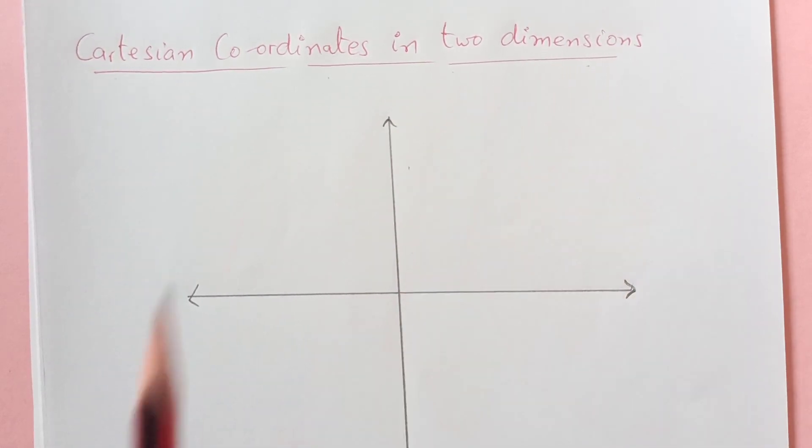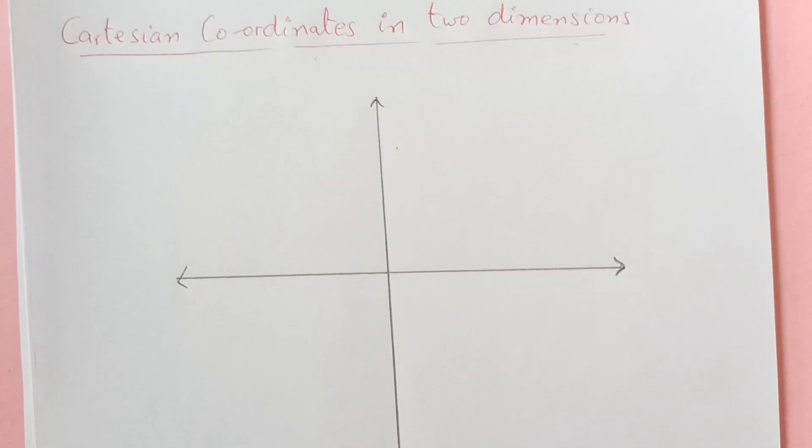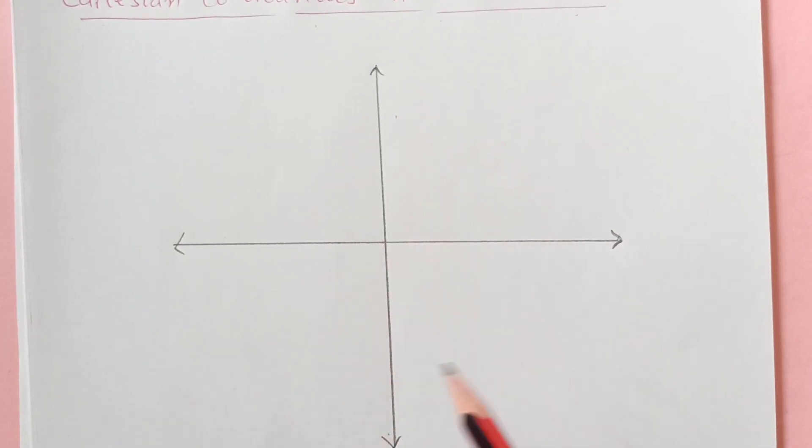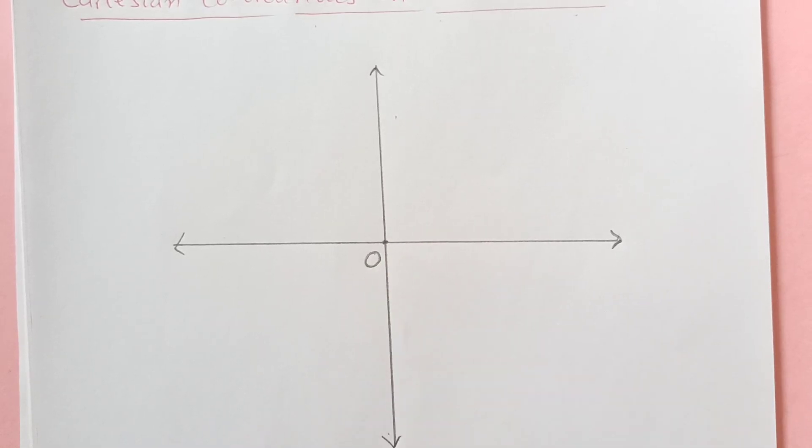For coordinate geometry you need to know all about the coordinate axis. So this is the coordinate axis here, this is origin, usually we denote it by O.